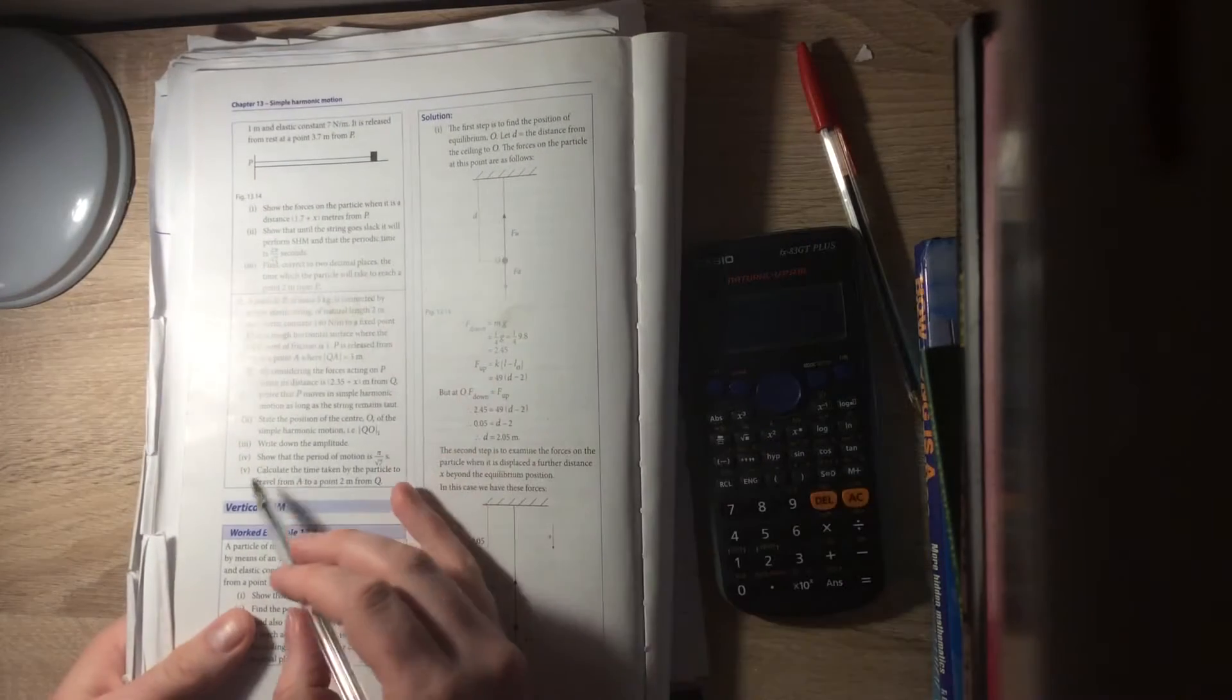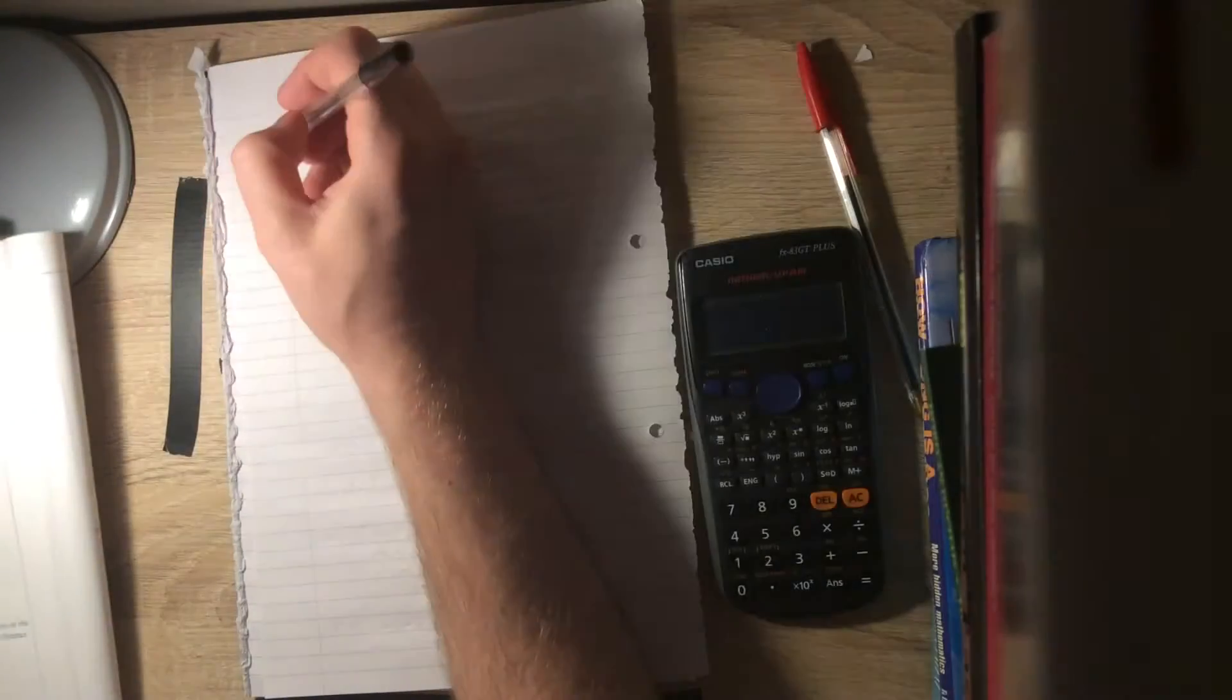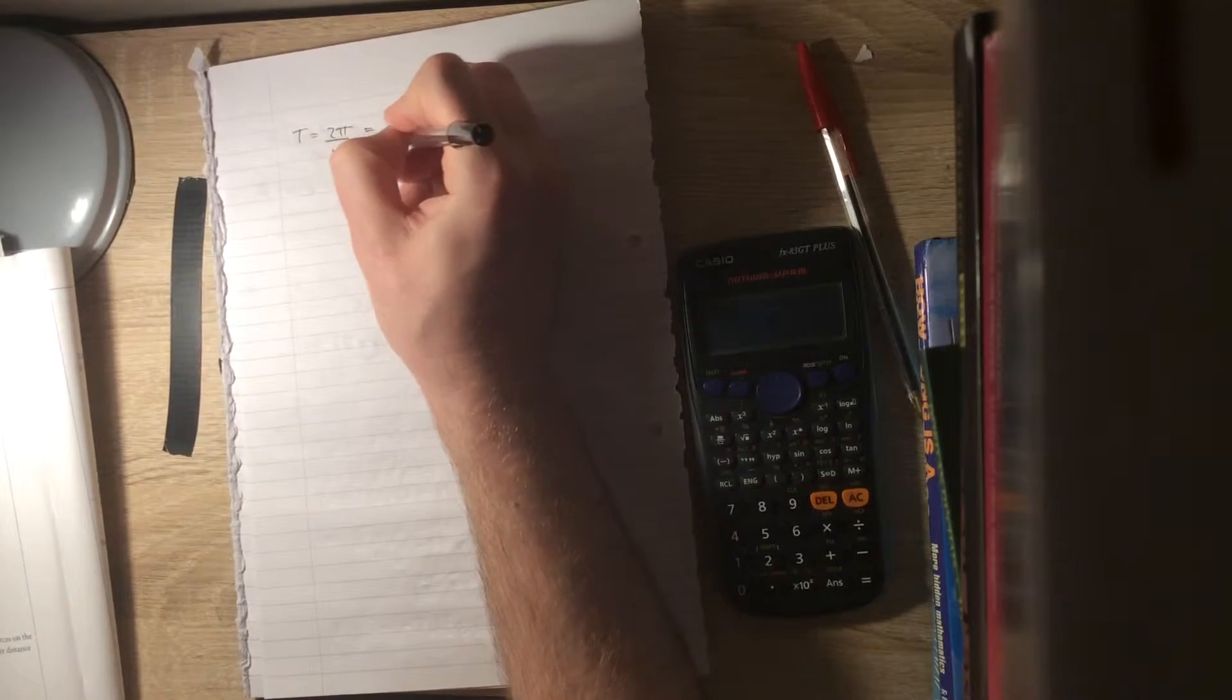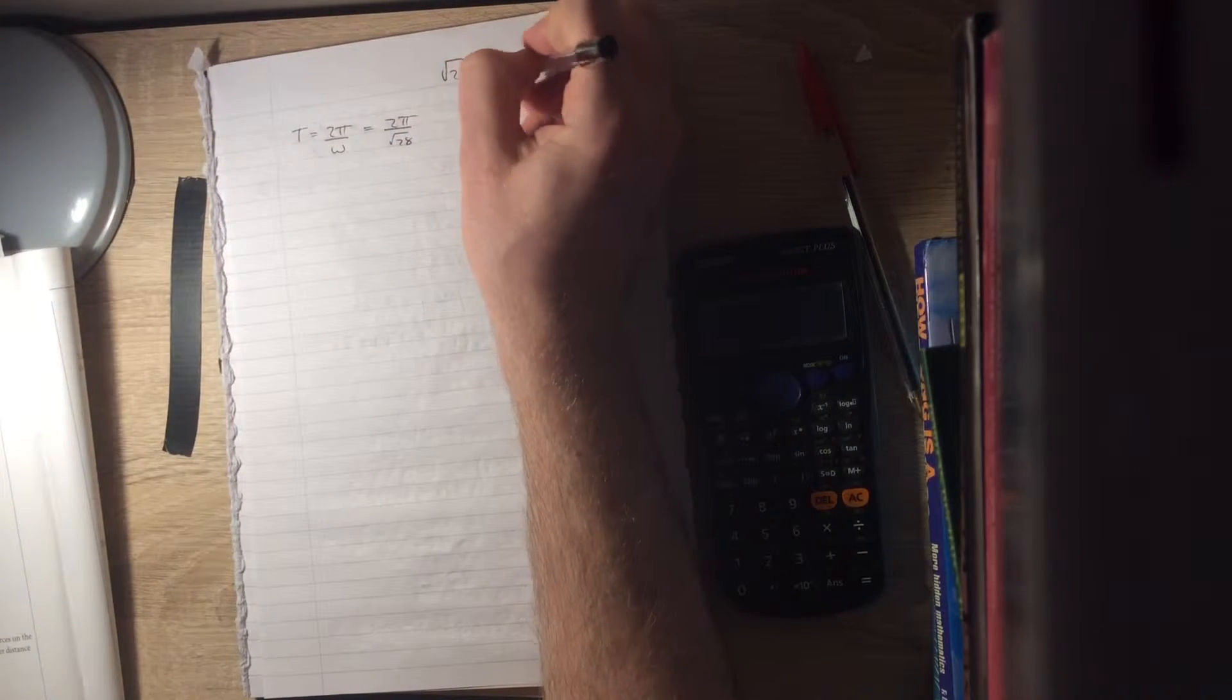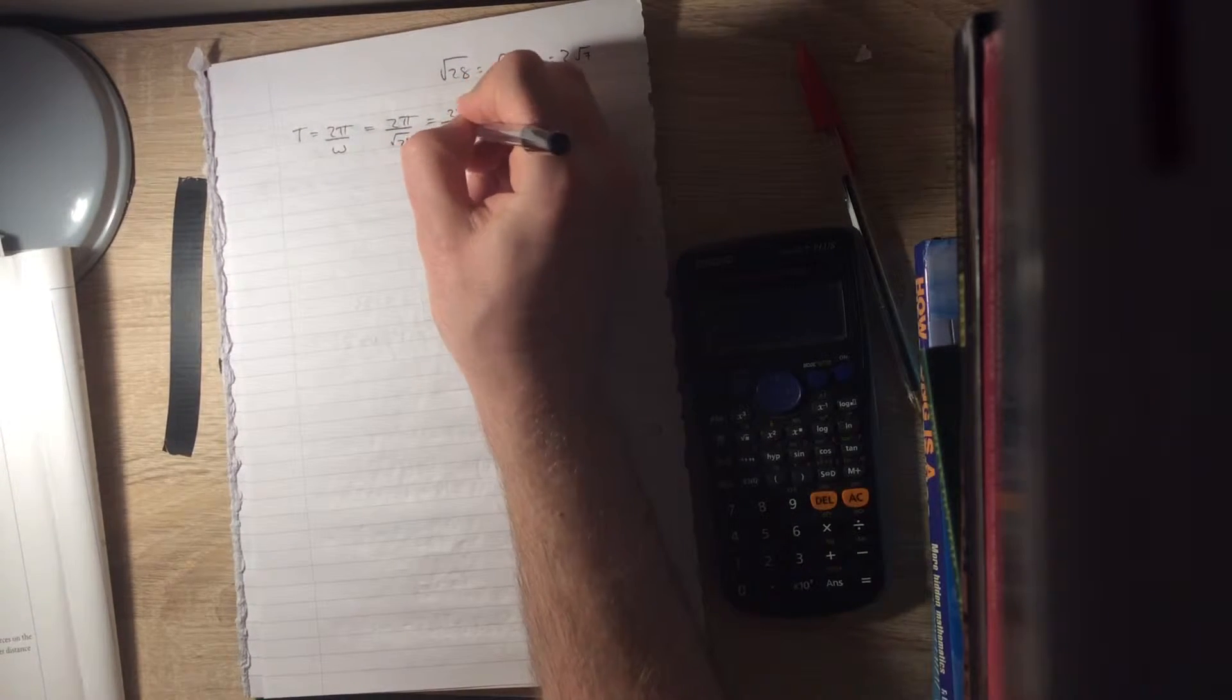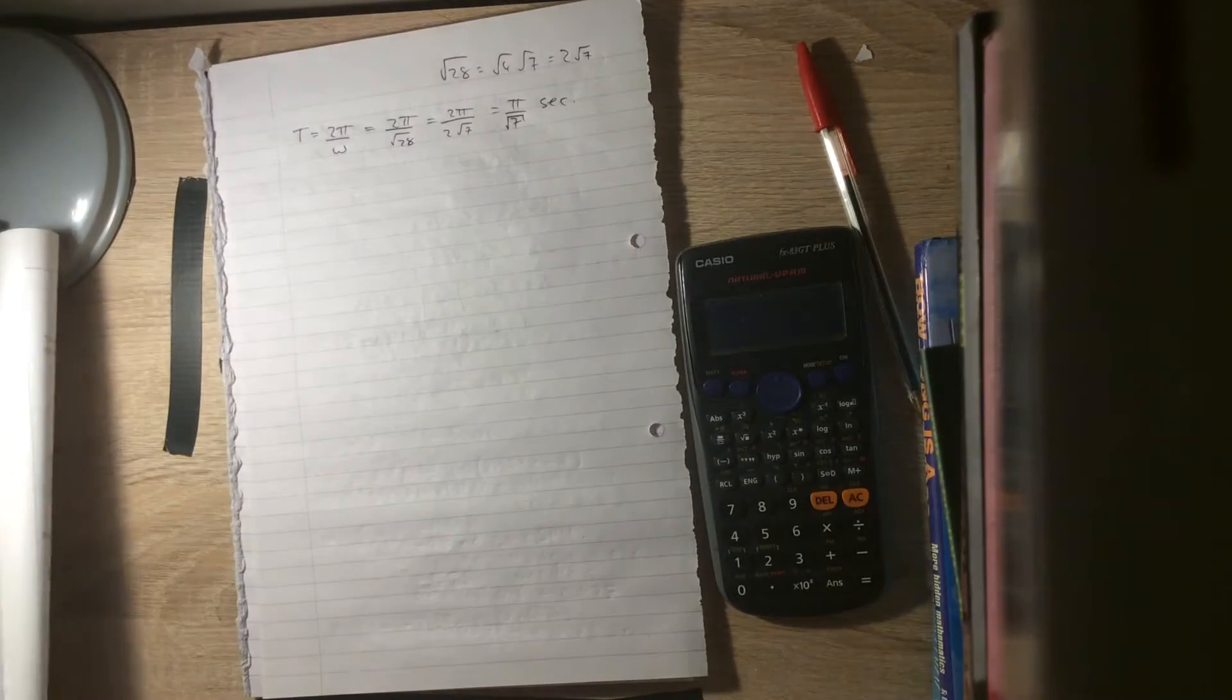Show that the period of the motion is pi over root 7 seconds. Well, our period is always 2 pi over omega, which is 2 pi over root 28. Root 28 is root 4 by root 7, or 2 root 7. So that becomes 2 pi over 2 root 7, which is pi over root 7 seconds. There's our period of motion.